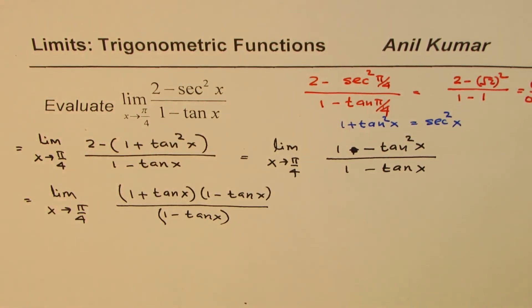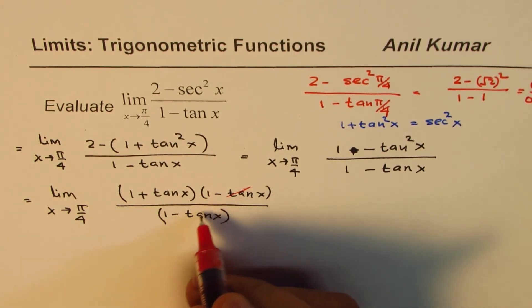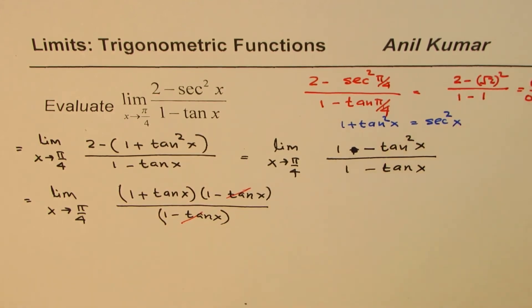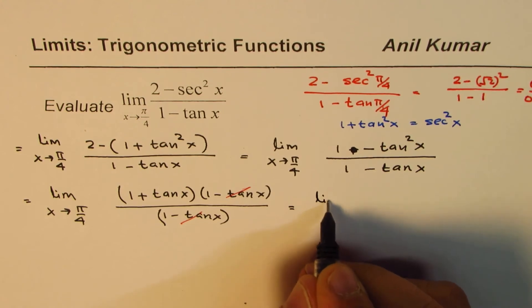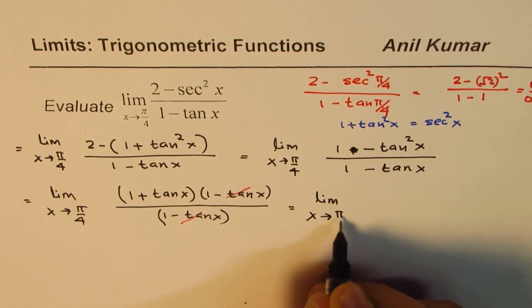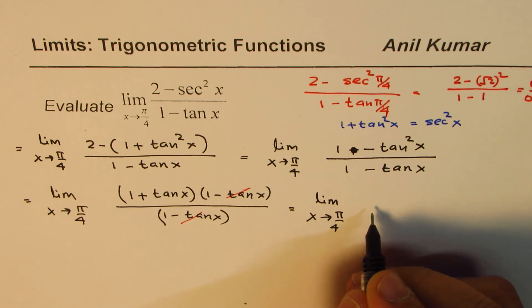Now you can cancel the (1 - tan x) terms, which gave us the 0/0 form, and rewrite this in simplified form: limit as x approaches π/4 of (1 + tan x).